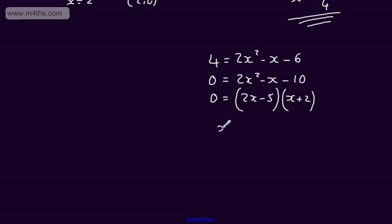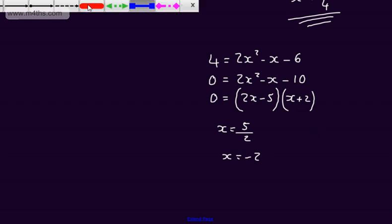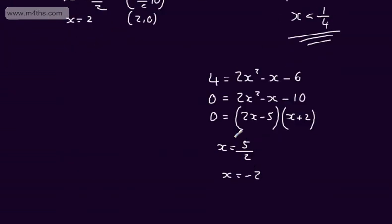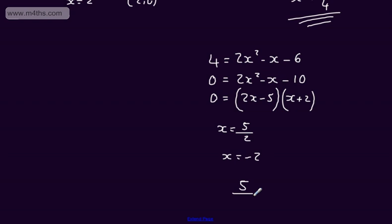From here we can see that x would be equal to 5 over 2, or x is equal to minus 2. We know the y-coordinate in each case is going to be 4. Going back to our graph, we have the point at minus 2 and the point at 5 over 2. All we're looking for is the distance apart, and 5 over 2 minus minus 2 gives us 9 over 2.